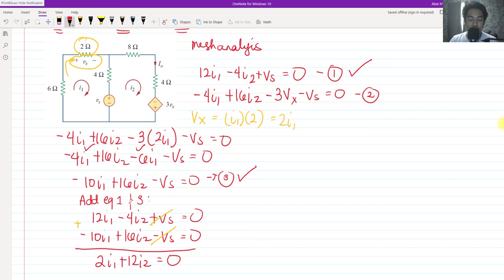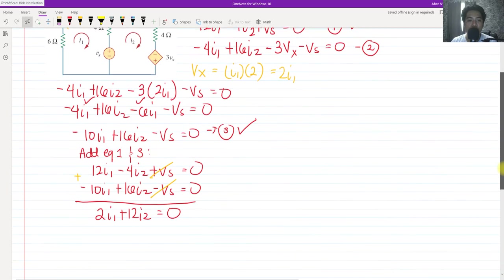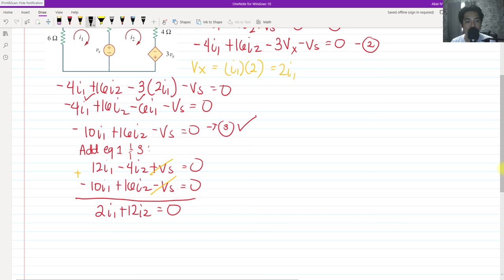So that is your answer, 2 I sub 1 plus 12 I sub 2. You can furthermore divide this by 2. So we have I sub 1 plus 6 I sub 2 equals 0. In other words, I sub 1 equals negative 6 I sub 2.